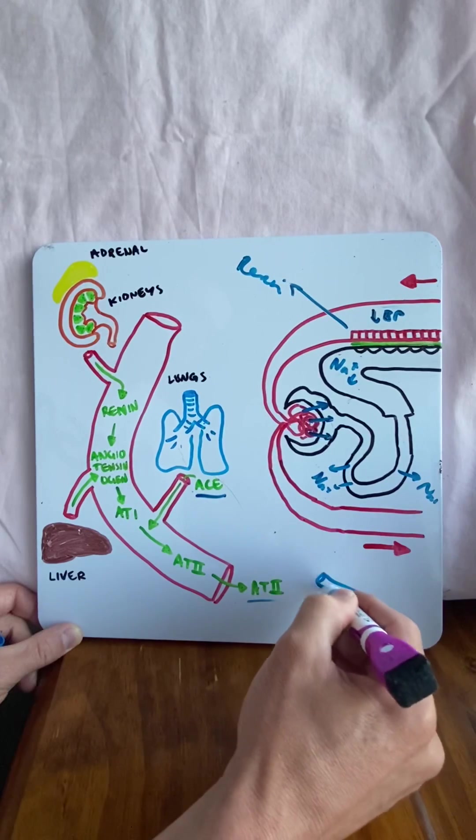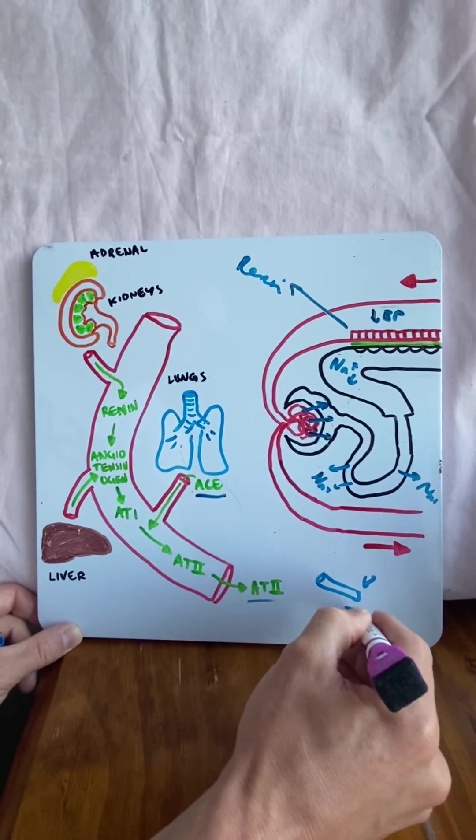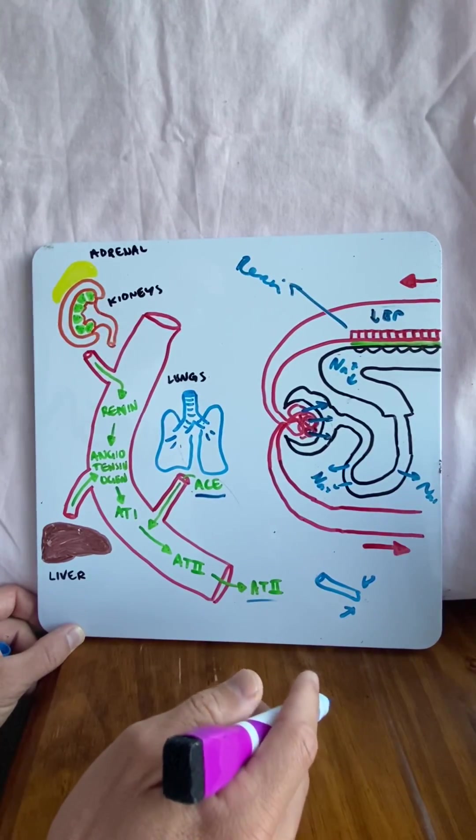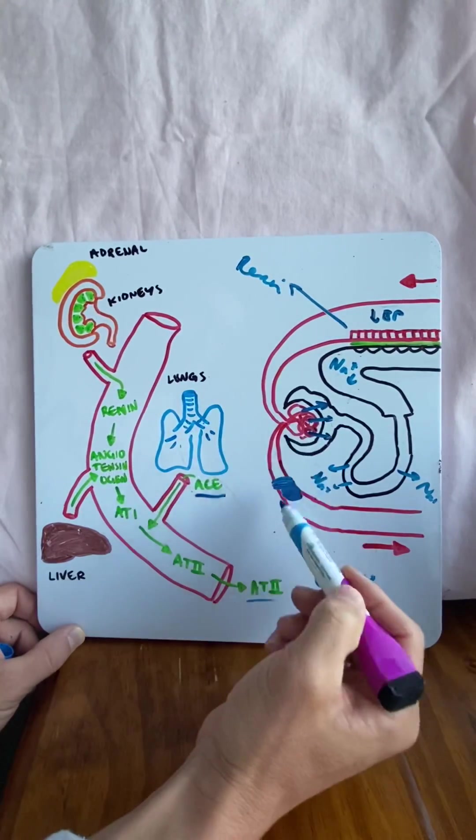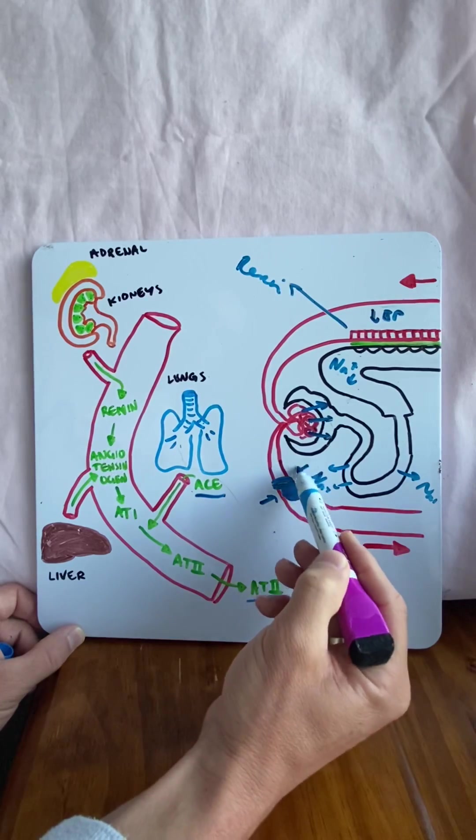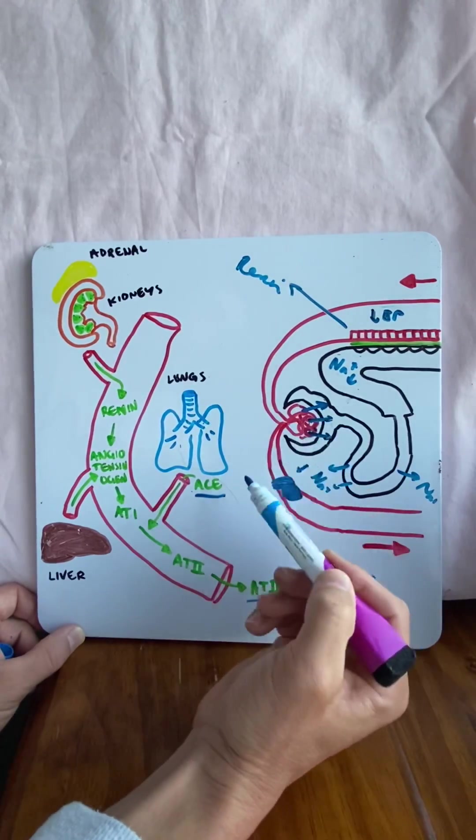What do they do? Angiotensin-2 tells the blood vessels of the body to constrict. Constrict blood vessels increases blood pressure. Second thing is it tells the efferent arteriole to constrict. If that constricts, the blood backs up and increases filtration.